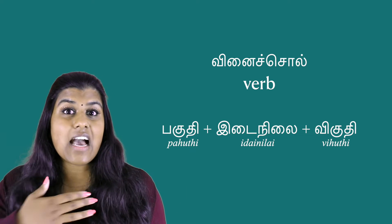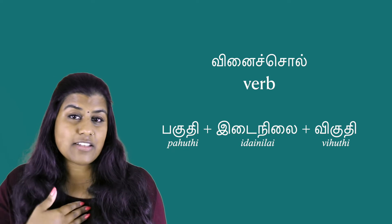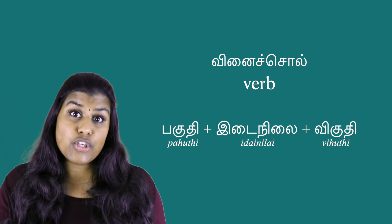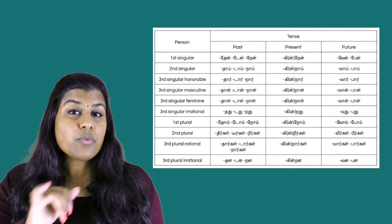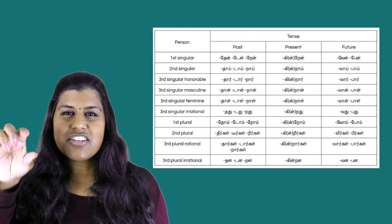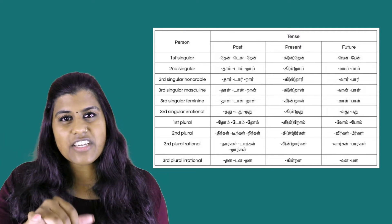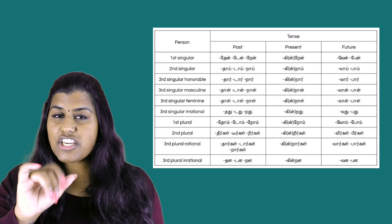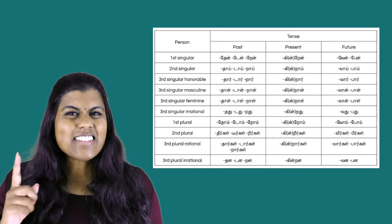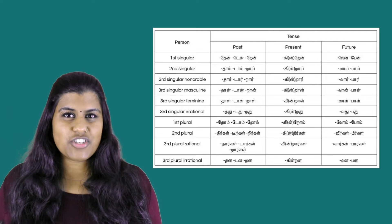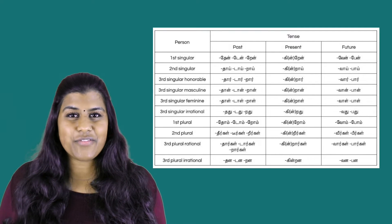Depending on who you address — if I say 'I', that's first person — the ending of the verb changes, as opposed to when I say 'you'. In the verb table you can find all the possible verb endings. It's not a case of just picking up the suffix and adding it onto the verb stem — the middle part of the verb changes as well. That's the tricky part in Tamil, but you can use this table as a rough guide.